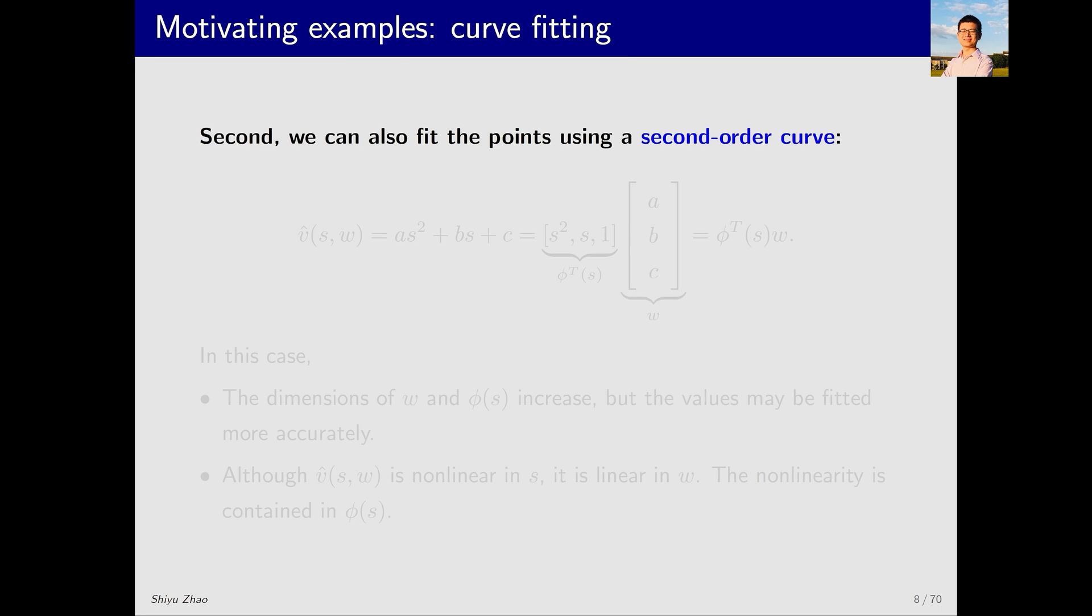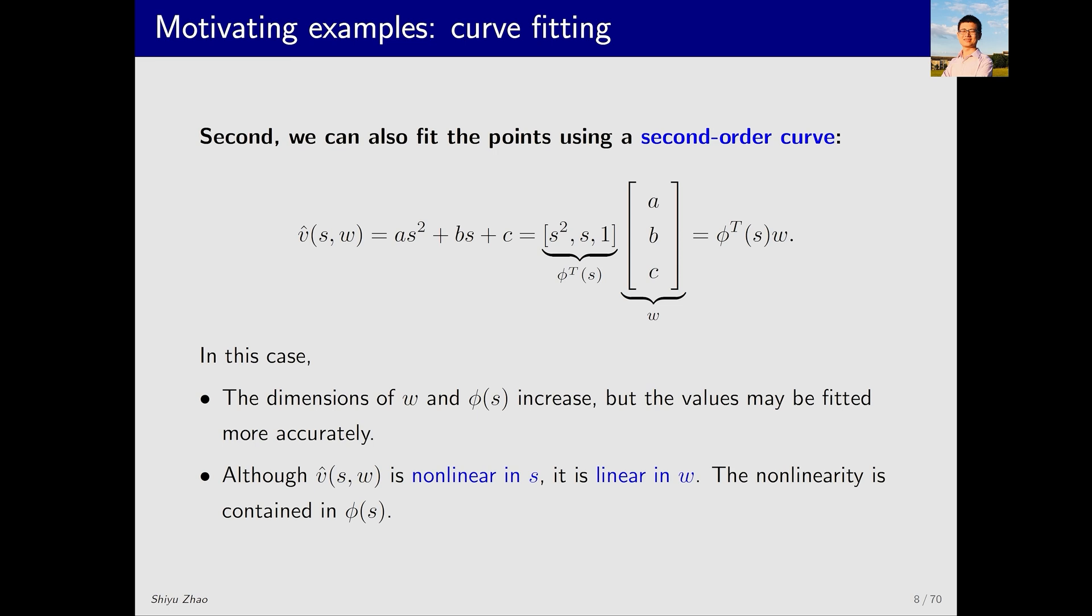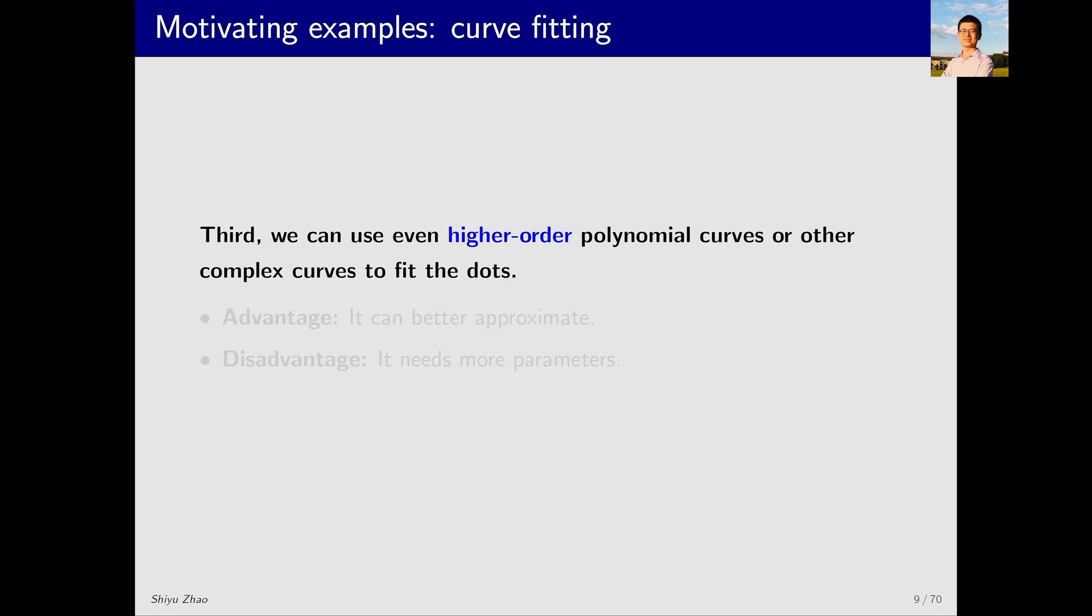Some of you may ask, can we use higher order curves to fit the values more accurately? The answer is, of course, yes. Suppose we use a second order curve. What is a second order curve? It is written in this form, v̂ equals a s² plus b s plus c. This can also be written in the form φᵀw, where the dimensions of φ and w increase, meaning I need to store more values. However, the advantage is that the accuracy of the fitting can improve. I need to mention that in this case the function is a non-linear function of s, but it is a linear function of the parameters a, b, c. The non-linearity is embedded in the feature vector, so v̂ is still a linear function of w. Of course, we can use something like neural networks to realize non-linear fitting, where the function is non-linear in w. We can continue increasing the order of the curve and even use more complex curves to fit these points. The advantage is that it can better approximate the true values, but the disadvantage is that it requires more parameters.